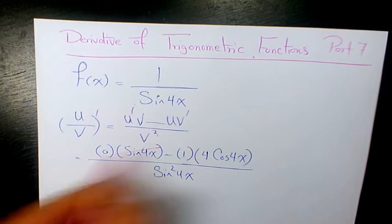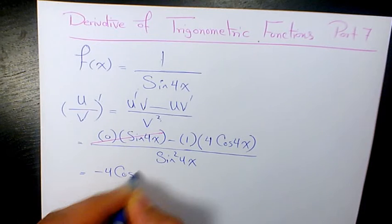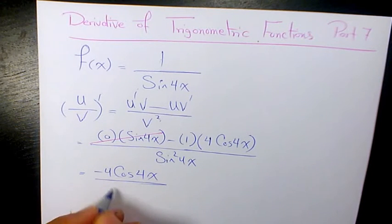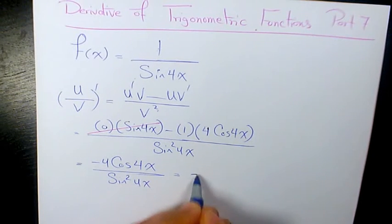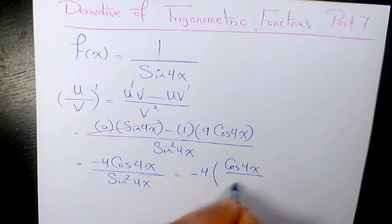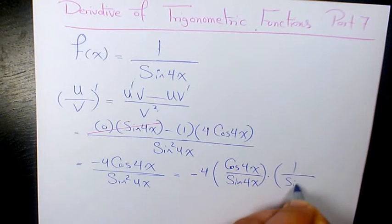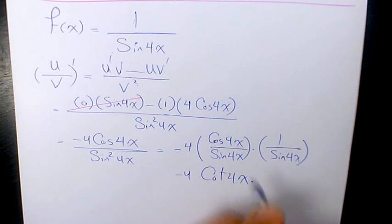Now, this part is going to be 0. We have negative 4 cosine 4x over sin squared 4x. Or you can say it's going to be negative 4 cosine 4x over sin 4x times 1 over sin 4x. That's going to be negative 4 cotan 4x times cosecant 4x.